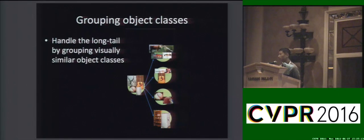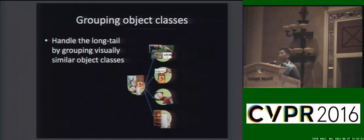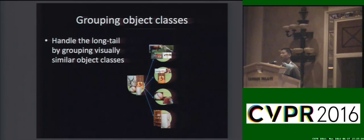To handle such a problem, we propose to group object classes by their visual similarity. For example, we can group the 200 object classes into animals, instruments, and balls, and then learn a deep model for each group separately — one model for animals, another for instruments, and another for balls.